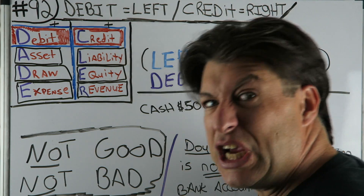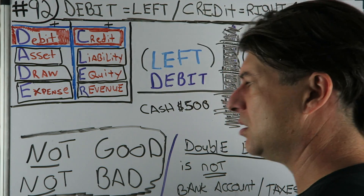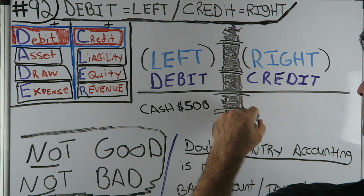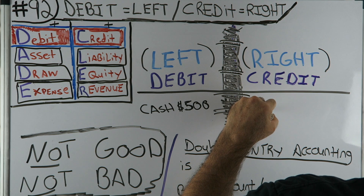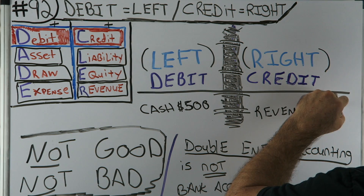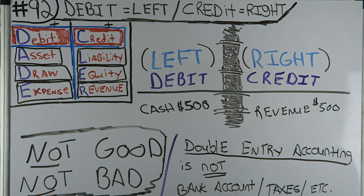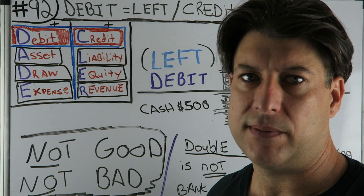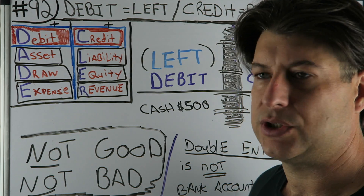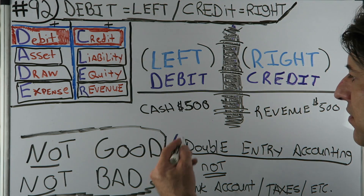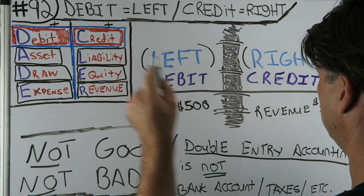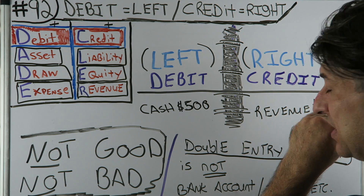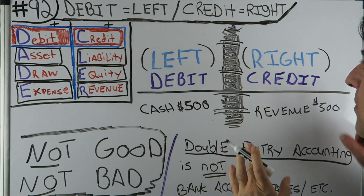Cash $500 — and let's say it was revenue. That's going to be your credit: revenue of $500. So if you did work for $500 — like I did a tax return for $500 and the person gave me $500 cash — that'd be my debit: that's an asset going up. And the revenue would be a credit, because that's what I do for my main work and that's being increased as well.